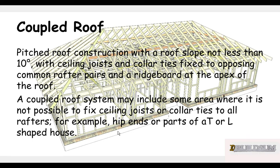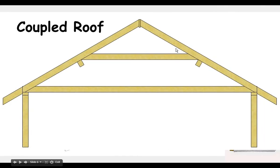The coupled roof system may include some area where it is not possible to fix ceiling joists or collar ties to all rafters, for example hip ends or part of a T and L-shaped building. So basically a coupled roof has ceiling joists and collar ties for the majority of the construction.